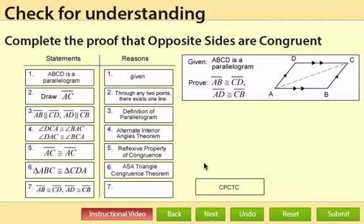So now that we have triangle ABC congruent to triangle CDA, we can use corresponding parts of congruent triangles are congruent to say that the opposite sides are in fact congruent. So that's how you complete this proof.